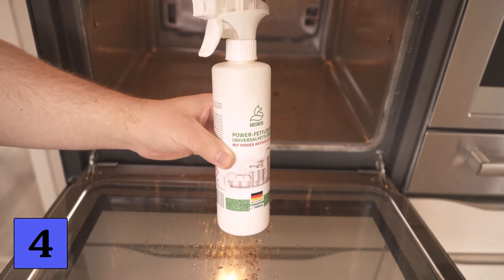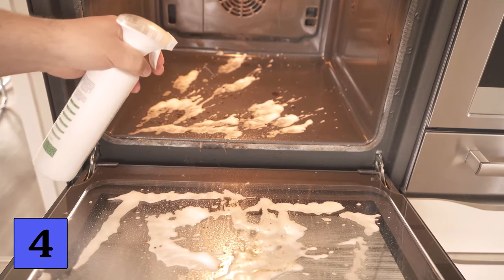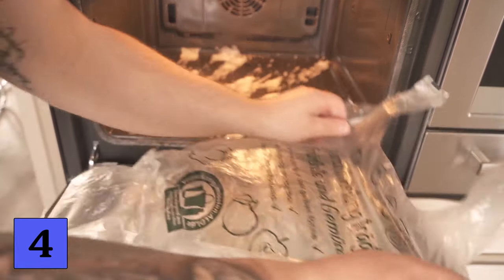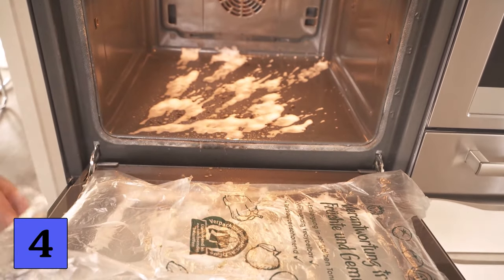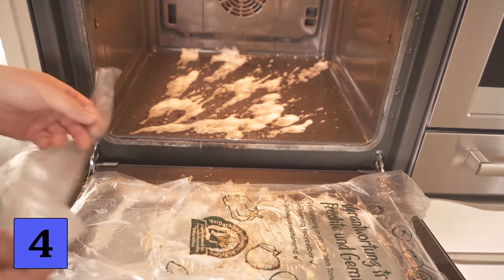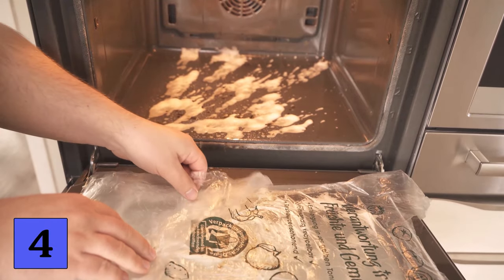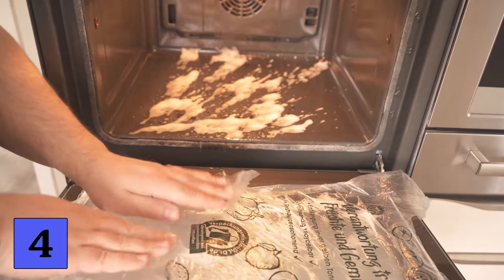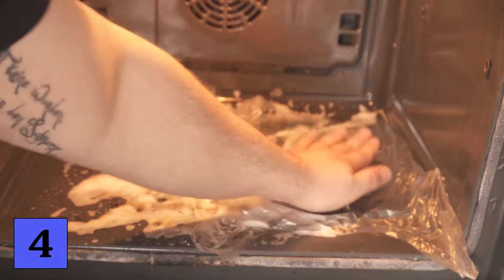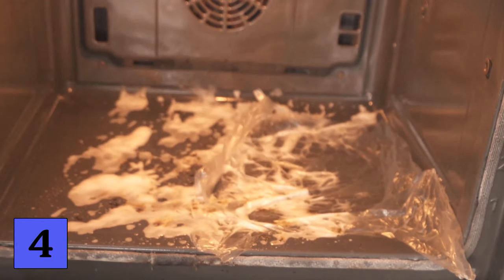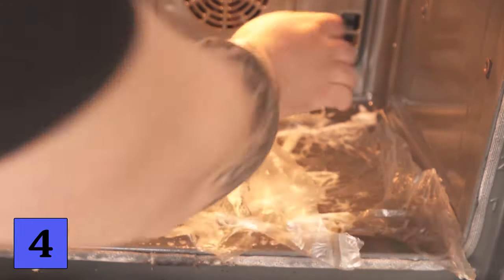So now I take this power grease remover and spray the entire oven with it. But instead of just letting it soak in, we put our plastic bags over it. This increases the effect because it doesn't dry out as quickly. Once you've put plastic bags all over, it's time to wait. Now let the whole thing work for about an hour. If the dirt is really heavy, you can leave it on for 2 hours. This will really soften all the dirt stains.